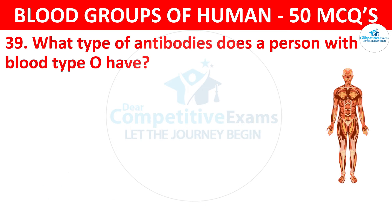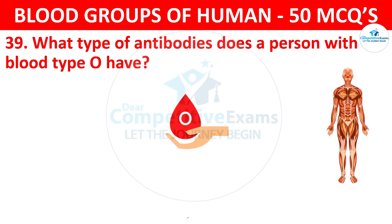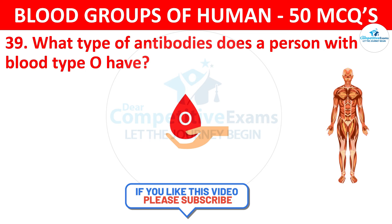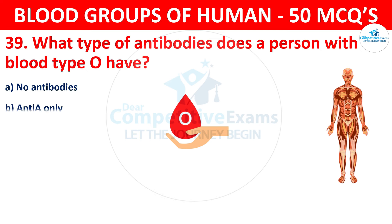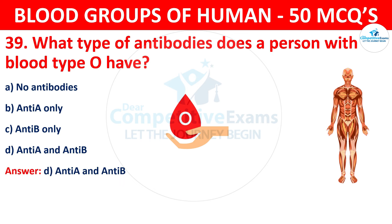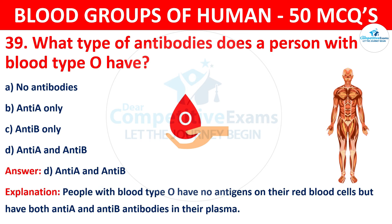Question 39: What type of antibodies does a person with blood type O have? The correct answer is D, anti-A and anti-B. People with blood type O have no antigens on their red blood cells but have both anti-A and anti-B antibodies in their plasma.